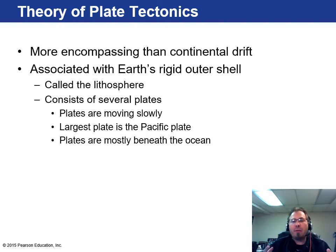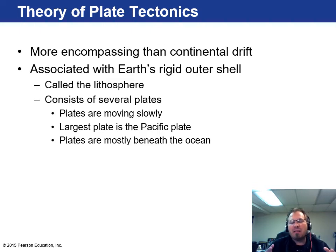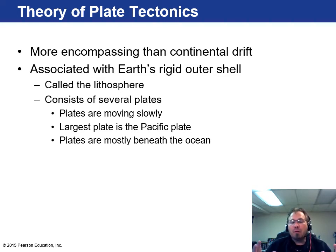The theory of plate tectonics is more encompassing than just continental drift. It's associated with the entire outer shell of Earth's crust called the lithosphere — the hard outer crunchy part of an otherwise gushy inside, kind of like some candy. It consists of several plates — about seven or eight main plates and some micro plates — that are moving very slowly. Some are being built and some are being destroyed. The largest plate on Earth is by far the Pacific plate, which encompasses most of the Pacific Ocean.